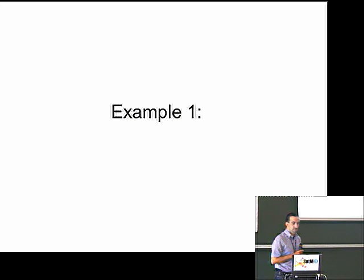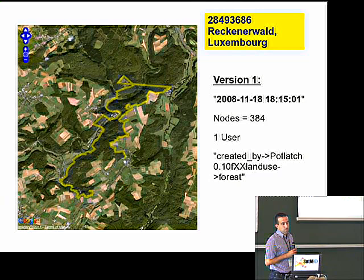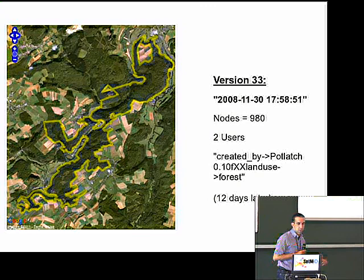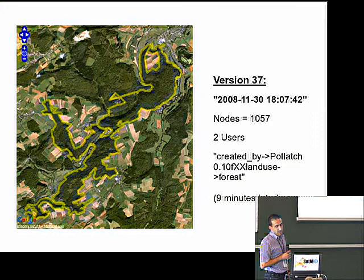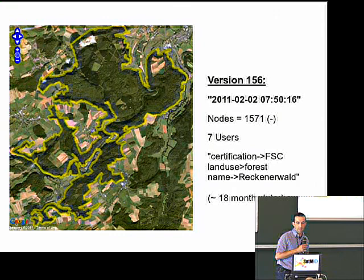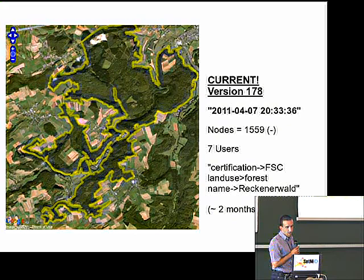I'm going to show some examples of the evolution of features to illustrate interesting things that can be seen if we look back into the history. Looking at a land use forest polygon from Luxembourg, created in 2008 — it's not closed at first, but two minutes later that's sorted out. About 12 days later, we have two users and the shape has already changed, though we still have an unfortunate crossover. Nine minutes later, they've added an arm and the polygon is growing. Three users, seven months later, then another year and a half — and it reaches its current version.